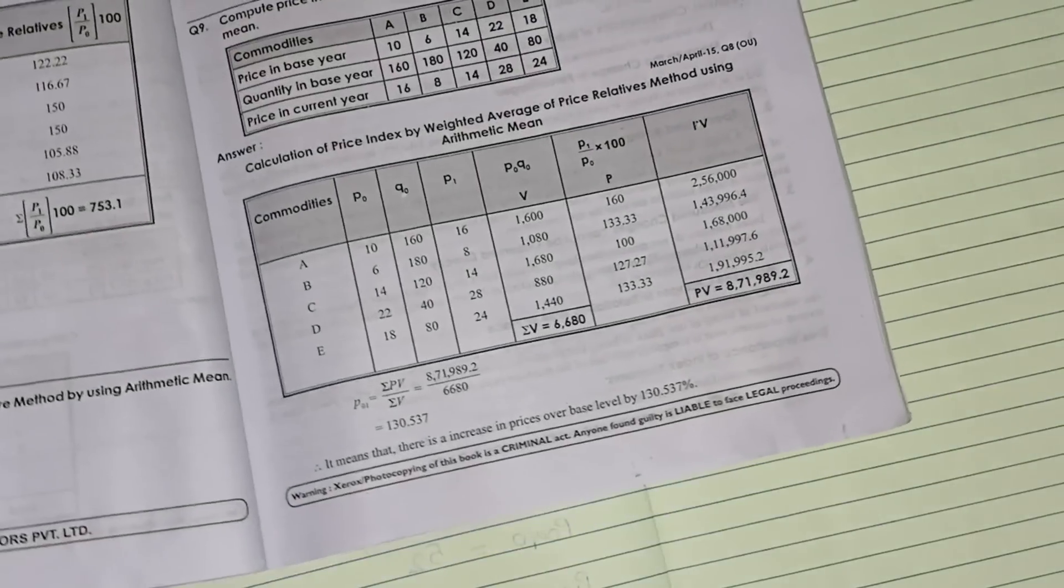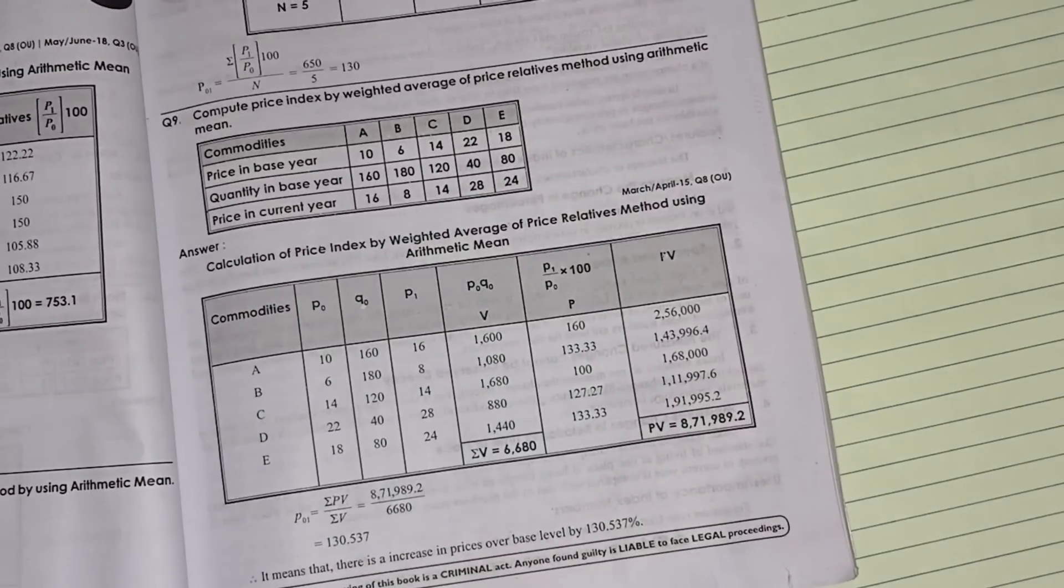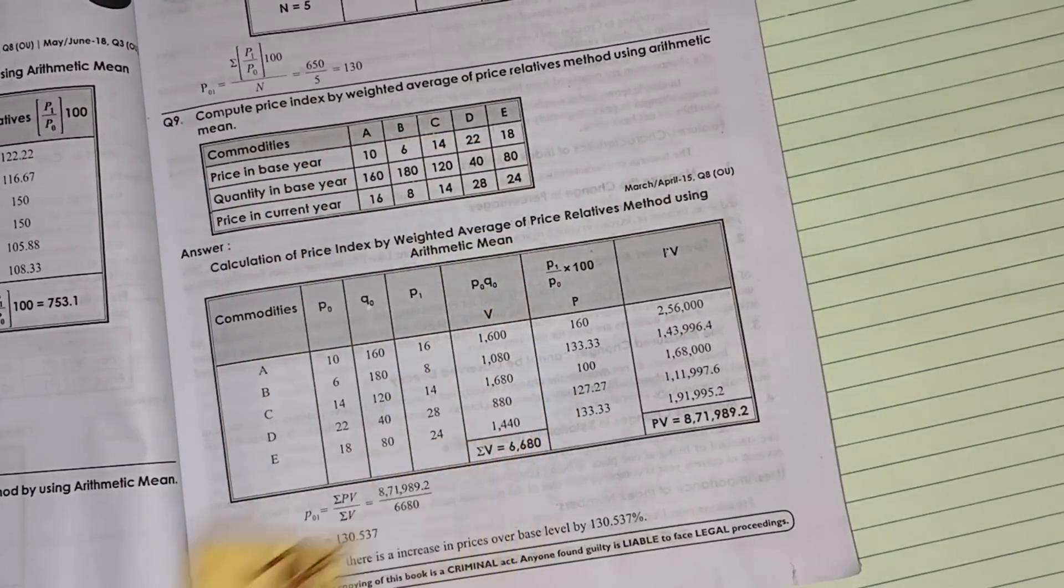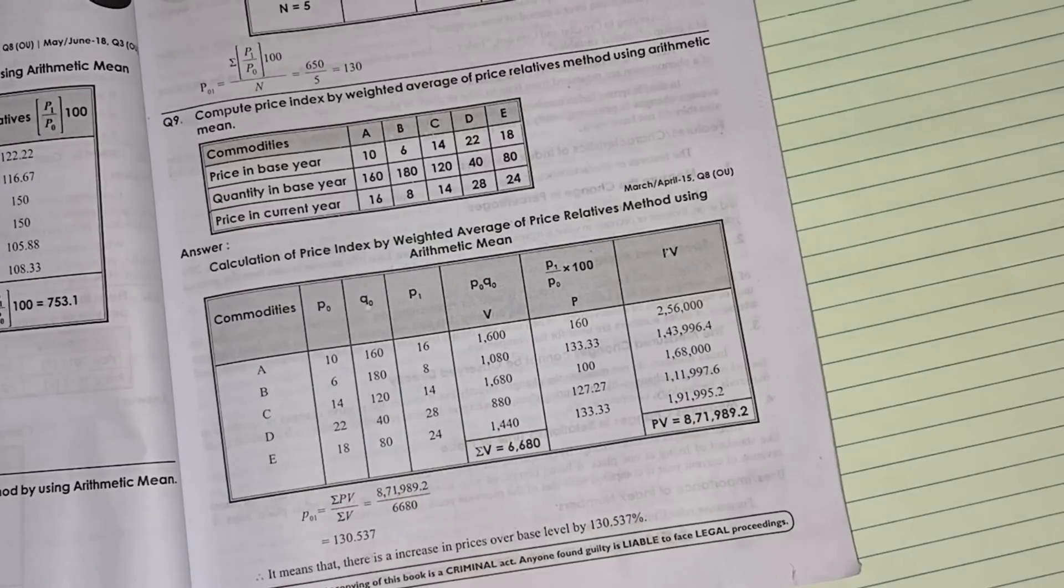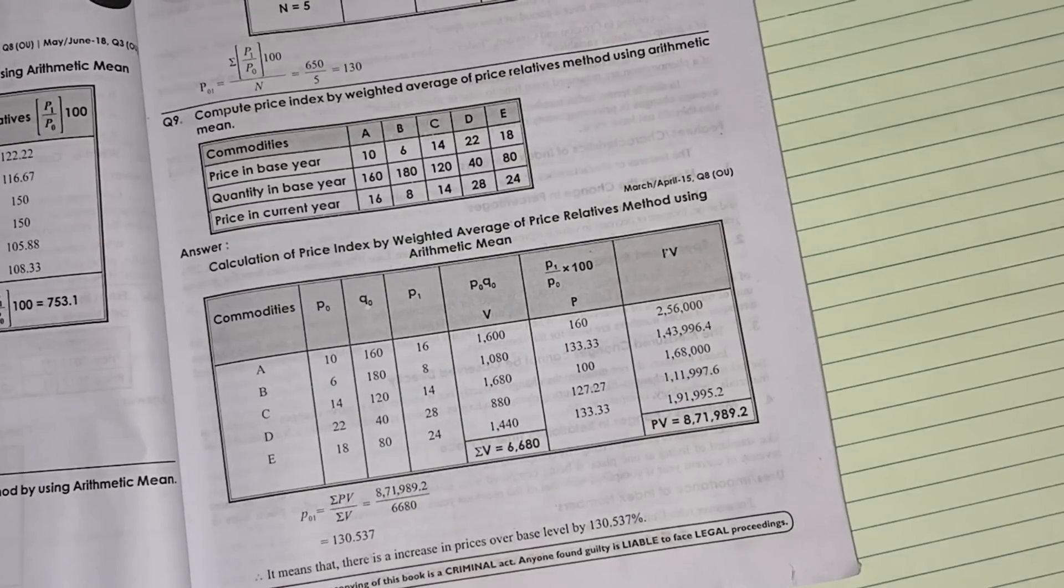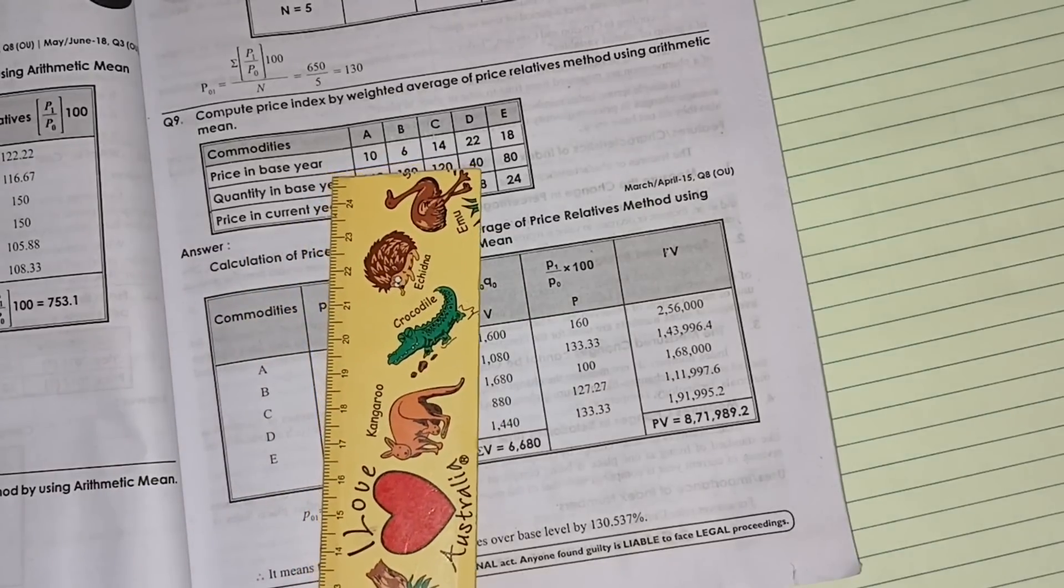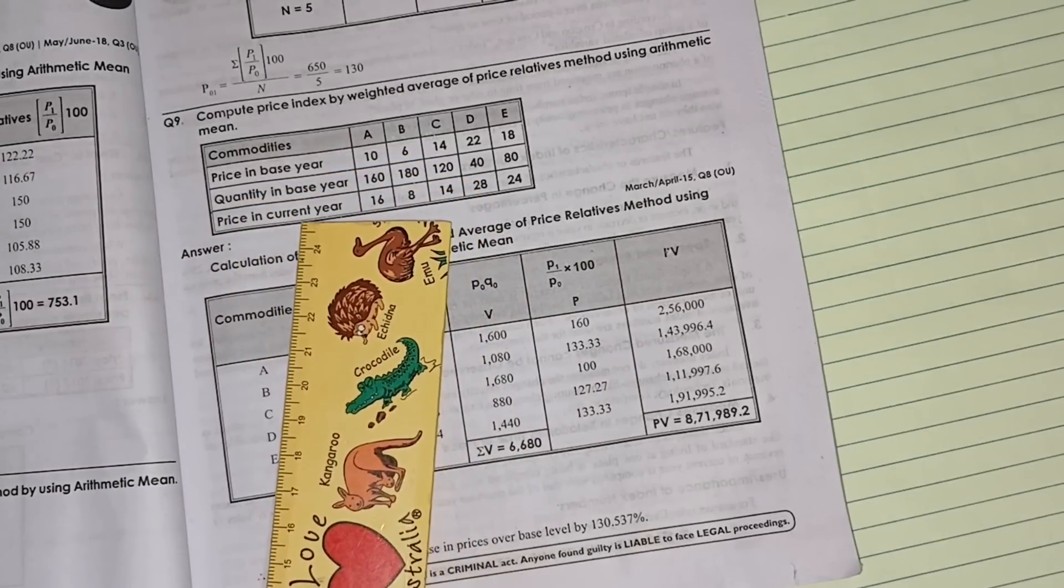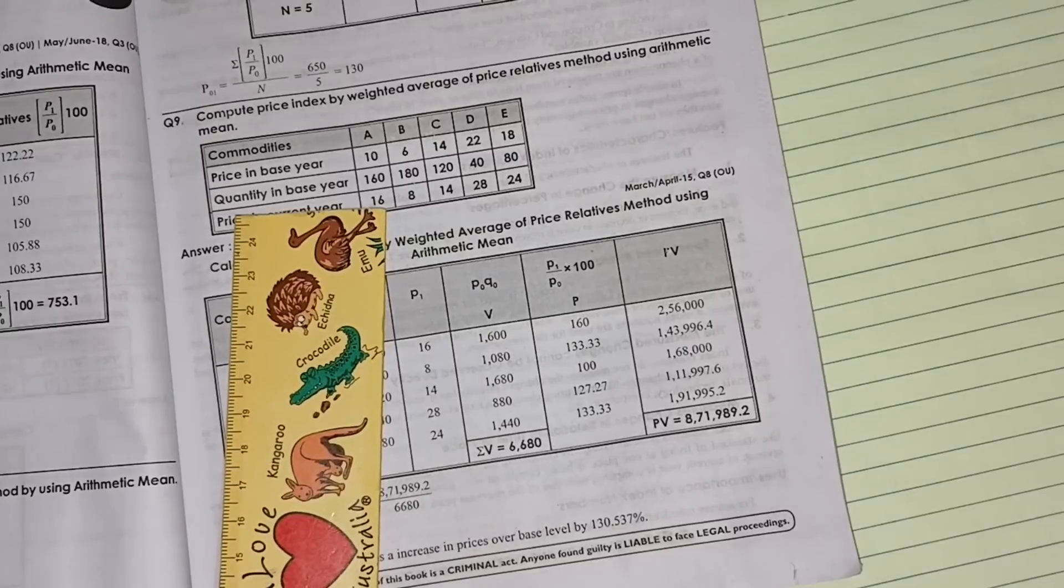Question 9, they have asked the same thing. Here they are asking about the index weighted value using arithmetic method. Whatever the question, base year price is P0, current year price is P1, base year quantity is Q0.